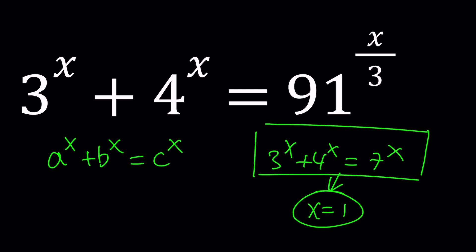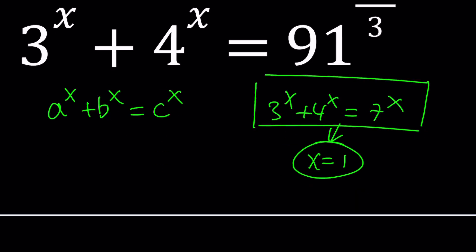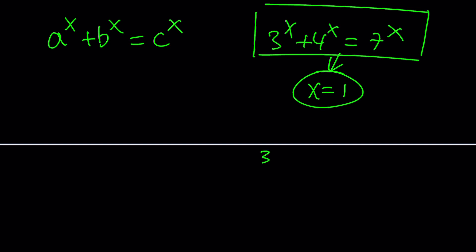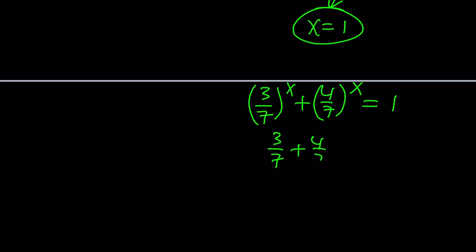Why? Because if you divide everything by 7, you get 3 over 7 to the power x plus 4 over 7 to the power x equals 1. And you probably know that 3 over 7 plus 4 over 7 is equal to 1. So, x equals 1 is a valid solution. And there's no other solution because this is a decreasing function, this is a decreasing function, and the sum of the two decreasing functions is also decreasing because its derivative is negative. Two negatives will make a negative.